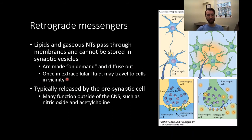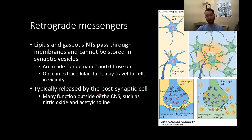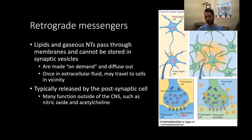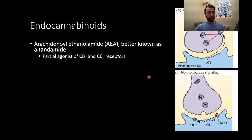Once they're in the extracellular fluid, they can travel to cells that are in the general vicinity. They are released by the postsynaptic cell — hence the term retrograde — and travel backwards to affect the presynaptic cell. So many of these have functions outside of the central nervous system, such as nitric oxide, or they can also function within the central nervous system, like our endocannabinoids. Neurotransmitters typically are released presynaptic to postsynaptic and produce their intracellular signal. However, retrograde messengers are produced in the postsynaptic cell, not put into a vesicle, and are released and diffused back across to the presynaptic cell to produce their effects.